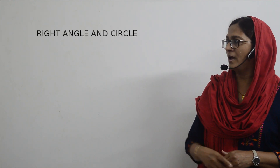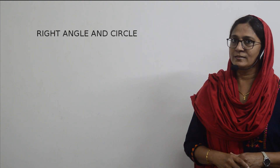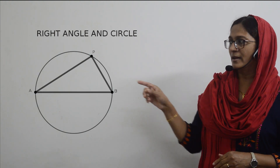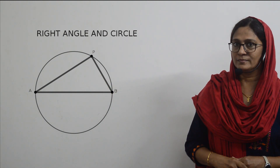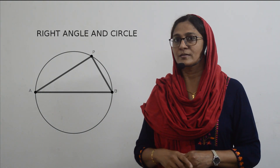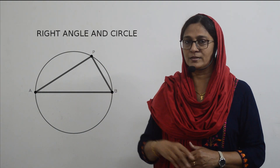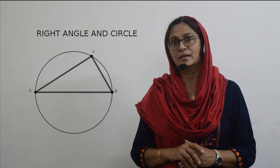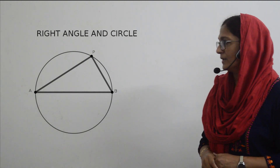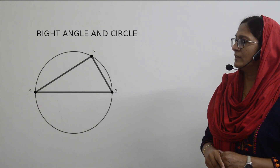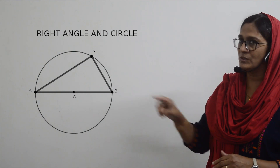Now why do these points lie on a circle? Let us think. I have drawn a circle and a triangle inside the circle, taking the base of the triangle as the diameter. What we have to prove is that the third vertex, point P, is a right angle. Let me join points P and O, which is the center of the circle.